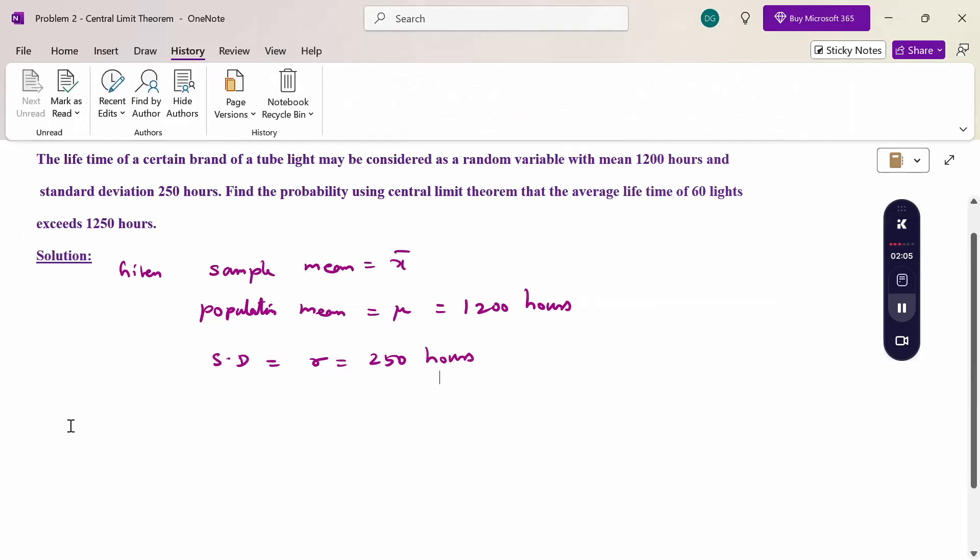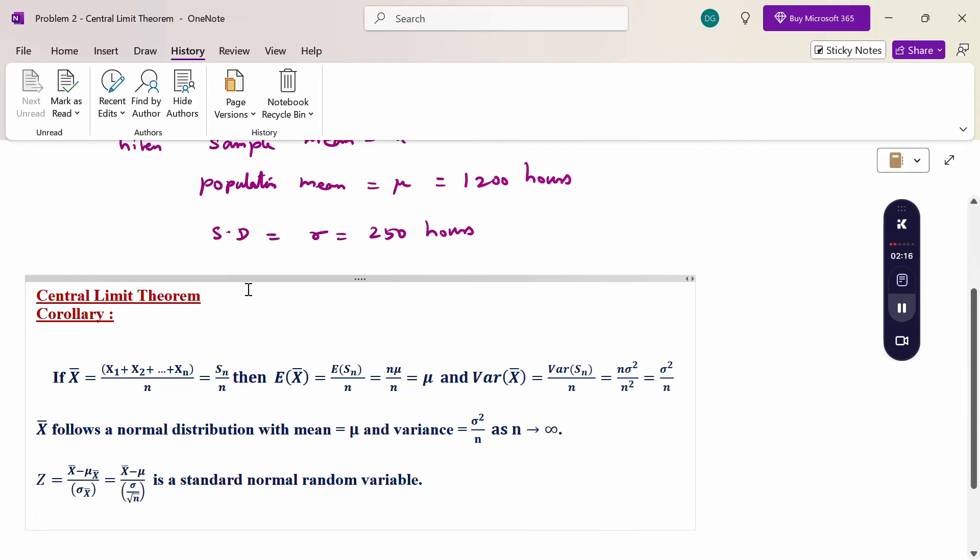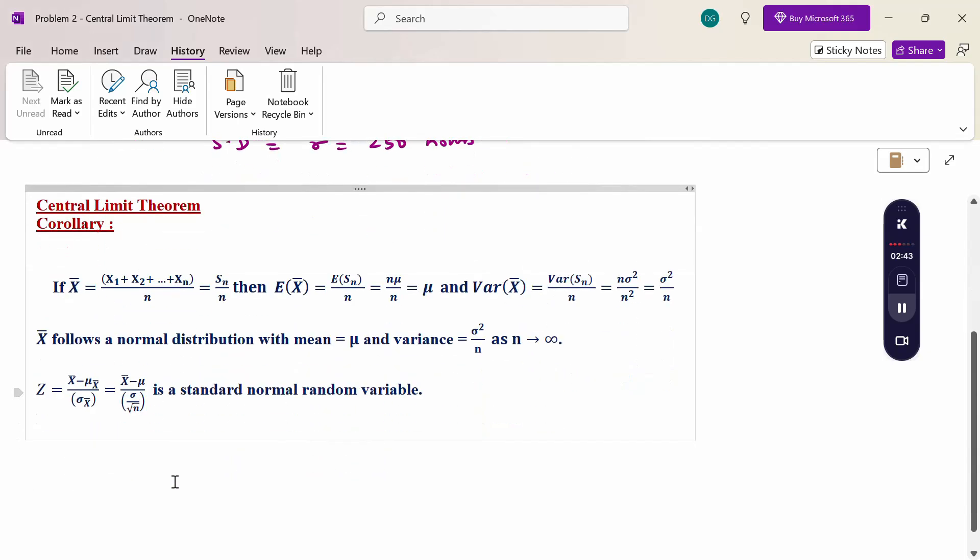Now we have to consider the form, the Central Limit Theorem corollary. If x bar equals (x1 + x2 + ... + xn)/n, then E(x bar) = mu and Var(x bar) = sigma squared by n. X bar follows normal distribution with mean mu, variance sigma squared by n as n tends to infinity. Z = (x bar - mu)/(sigma/sqrt(n)) is a standard normal random variable.